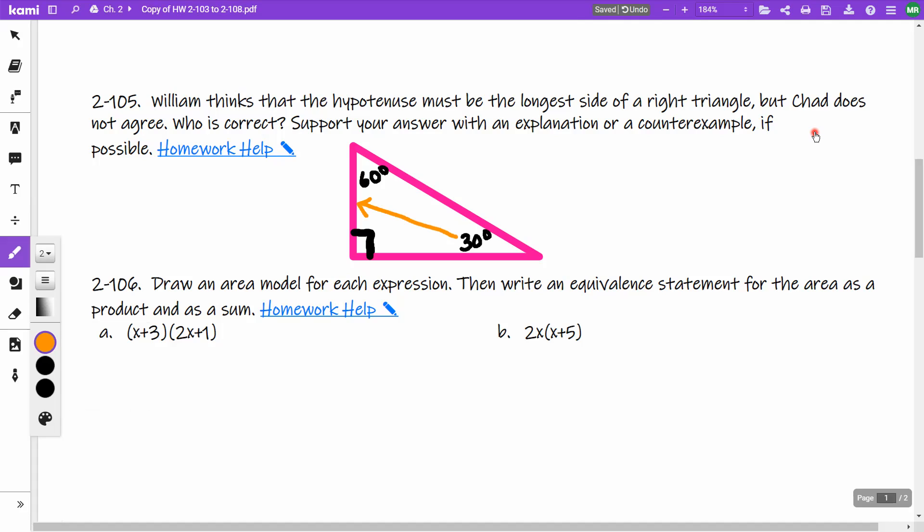Now what happens is my hypotenuse is going to always be across from my right angle in a right triangle. 90 degrees is the biggest angle, so that means that since the 90 degrees is the biggest angle, this has to be the longest side. And if I was to physically measure it, you're going to see that it is longer than the side across from the 60.